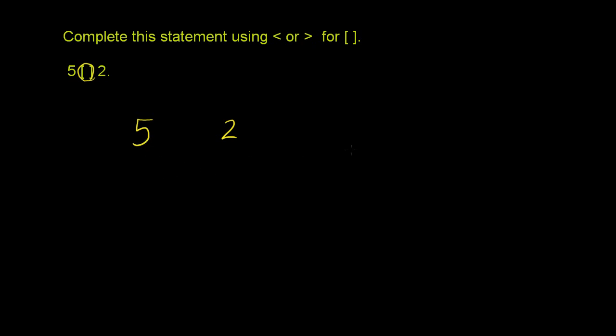If you count to 5, you're going to pass up 2. If you look at a number line here, if you started at 0, 1, 2, 3, 4, 5, you see that 2 comes before 5. 2 is less than 5.